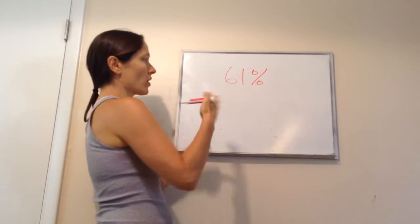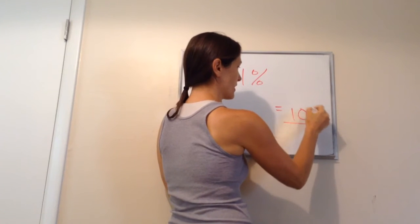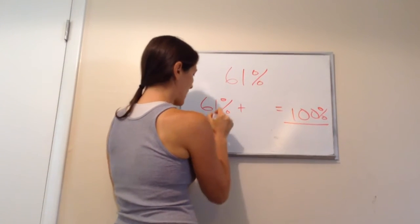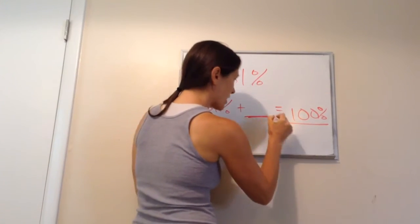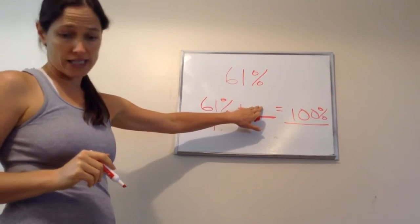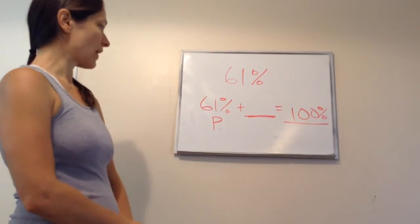Well, what is a complete percentage amount? 100%. So, if he got 61% that was correct, that's part plus another part equals the whole. So, how much is not correct?